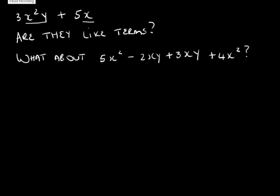Now what about 5x squared minus 2xy plus 3xy plus 4x squared — can we add those terms together? We can, but we can only add 5x squared to 4x squared, and we can add negative 2xy to positive 3xy.